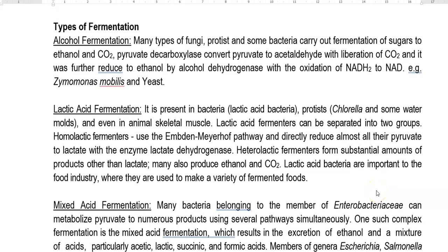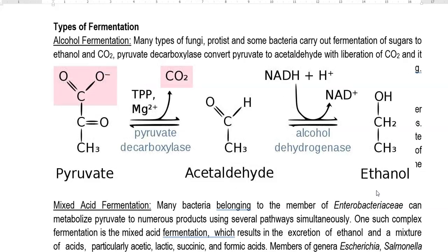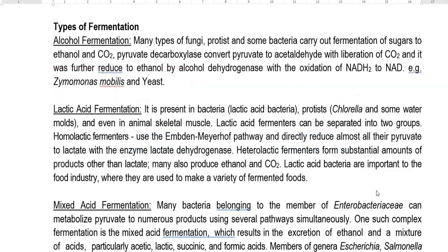Now we look at the types of fermentation. The first one is alcohol fermentation. Many types of fungi, protozoa, and some bacteria can carry out the fermentation of sugars to ethanol and carbon dioxide. Pyruvate decarboxylase is an important enzyme that converts pyruvate to acetaldehyde with the liberation of carbon dioxide. It is further reduced to ethanol by another enzyme called alcohol dehydrogenase, with the oxidation of NADH to NAD. This process is operative in yeast growing under anaerobic conditions.